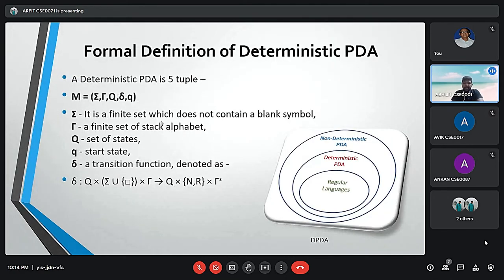This is the formal definition of deterministic PDA, pushdown automata. A deterministic pushdown automata is a 5-tuple consisting of Σ, Γ, Q, q₀, and δ. Σ is a finite set of states which does not contain any blank symbol. Γ is a finite set of stack alphabets. Q is a set of states, q₀ is the start state, and the transition function is denoted with δ.